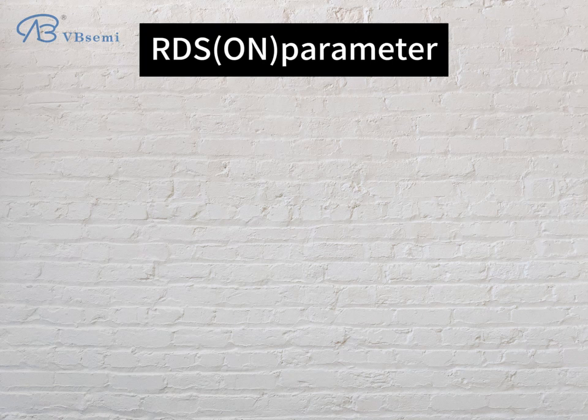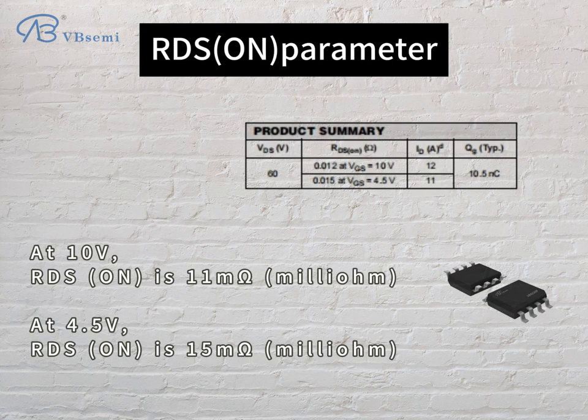RDS-ON parameter: at 10V, RDS-ON is 11mΩ; at 4.5V, RDS-ON is 15mΩ.